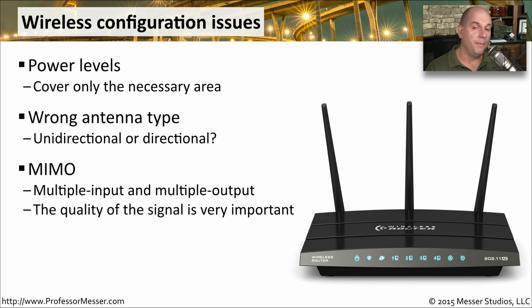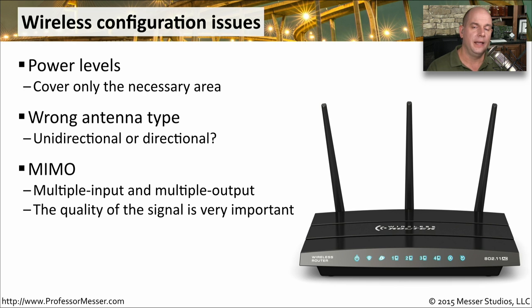You should also be aware of MIMO configurations within your wireless access point. You may have the option to enable or disable different receivers and transmitters and use different antennas that are on the back of your wireless access point. This will help refine the signal when it's received and certainly helps when you're sending large amounts of bandwidth out to the wireless network.